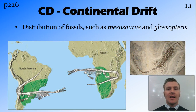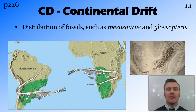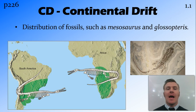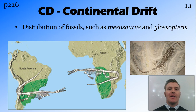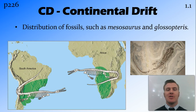Finally, another piece of evidence was the distribution of fossils — such as Mesosaurus, which was an early aquatic animal, and Glossopterus, a type of plant. He found that in his recreation of Gondwana, those fossils were found in similar areas once you put the two continents together.